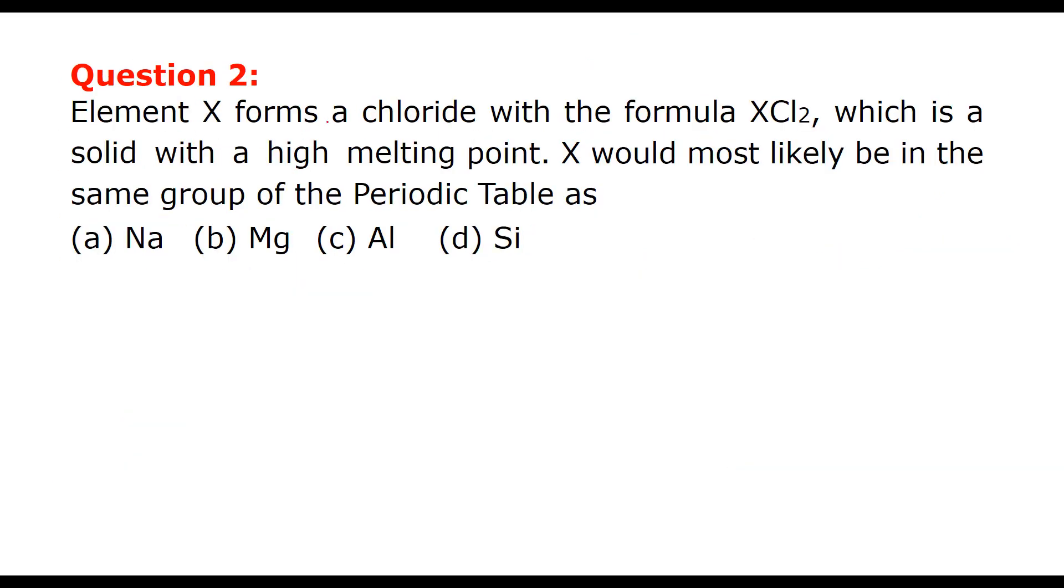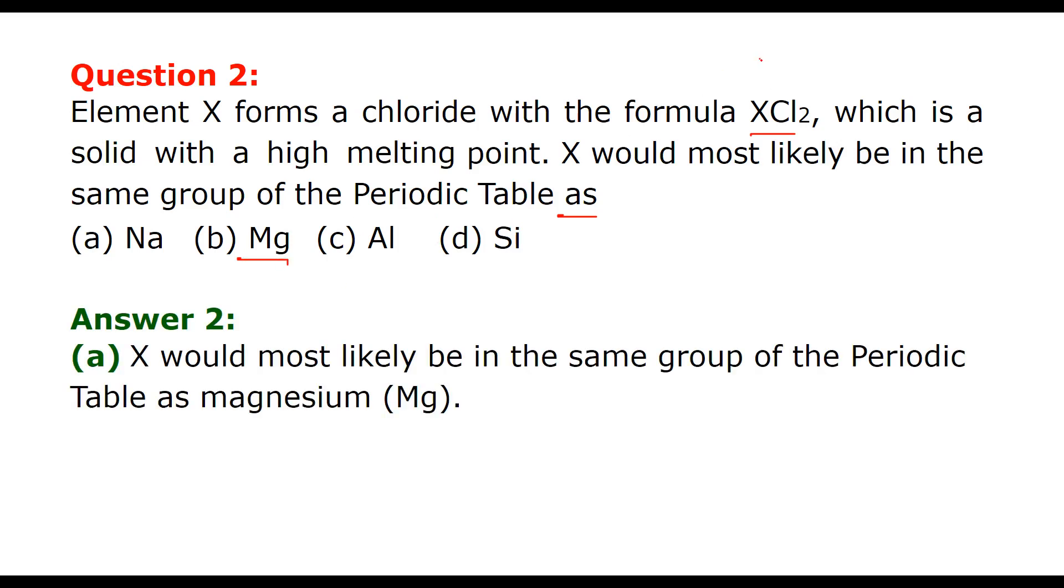Element X forms a chloride with formula XCl2 which is a solid with a high melting point. Now X would most likely be in the same group of the periodic table as? What is the answer? It is magnesium. Why? Because it will form MgCl2. They are in the same group of the periodic table. So X would most likely be in the same group as magnesium.